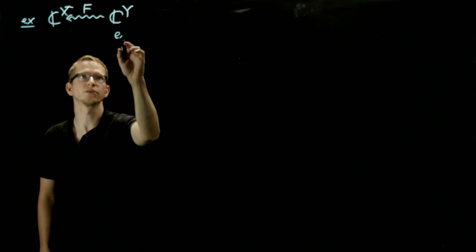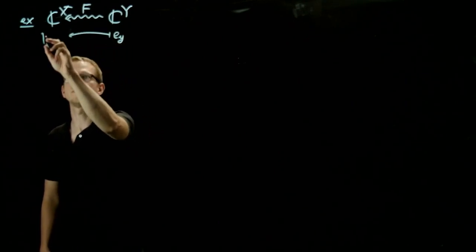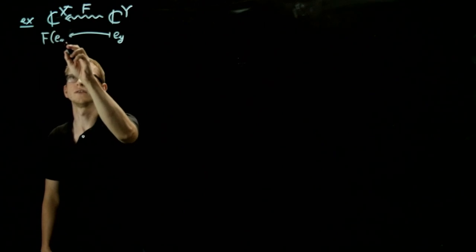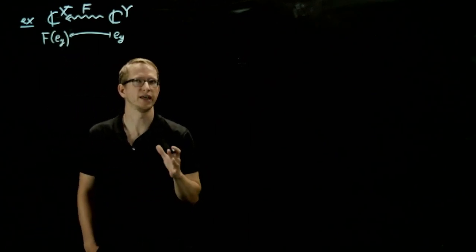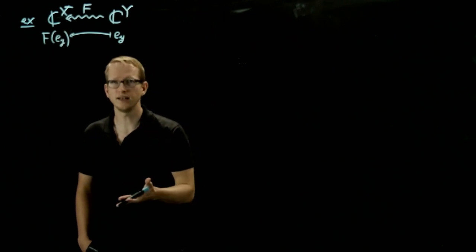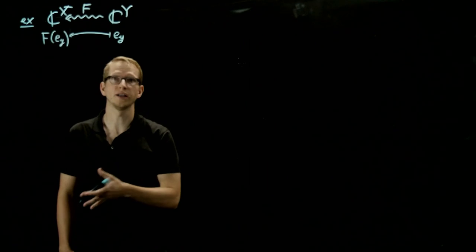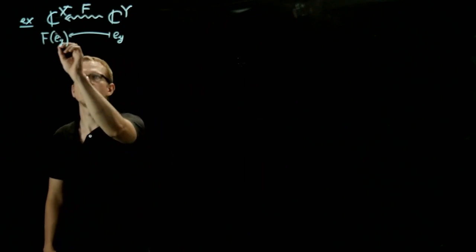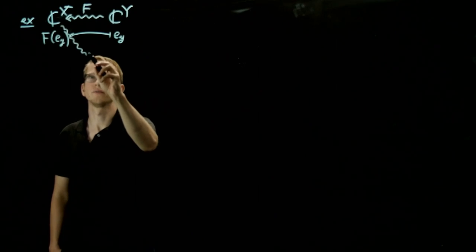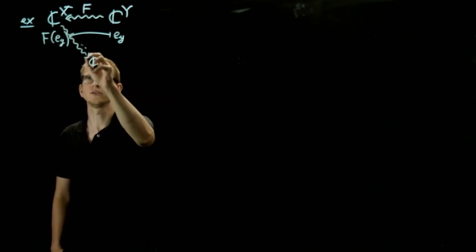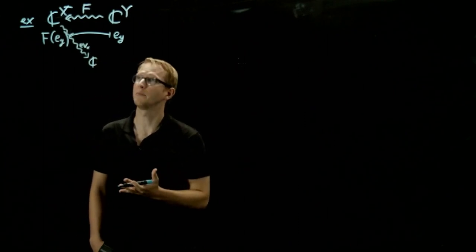So if we take our basis vector E_y, then that gets mapped to F of E_y. Now F of E_y is a function on X, so it itself is completely determined by its evaluation on elements of X. So we actually have a map here, back down to C, that just evaluates at x. And this is also a positive unital map.